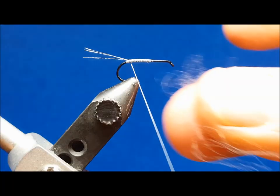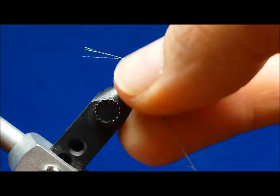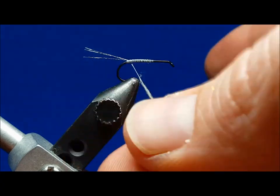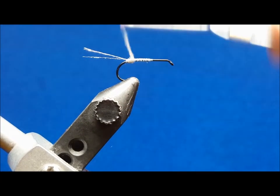When using this type of dubbing, I prefer not to use any tack or adhesive on the thread. The fine diameter of these fibers easily twist into a nice tight rope that can be used to create buoyant and smoothly tapered dry fly bodies.